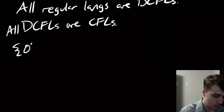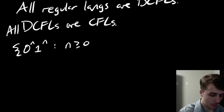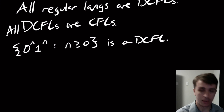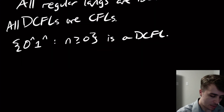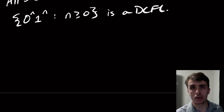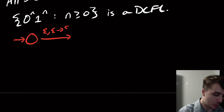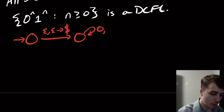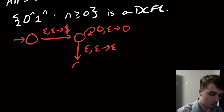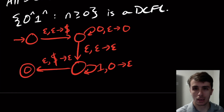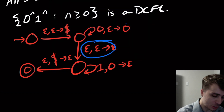One thing we can show is that the language 0^n 1^n — this famous non-regular language — is a deterministic context-free language. The normal PDA we construct for this is not a deterministic PDA. We push a dollar sign at the beginning, go to a state where whenever we see a zero we push a zero, then take an epsilon transition to another state where we match all the ones with the zeros, and finally pop the dollar sign and accept. The issue is the epsilon transition and the self-loop — together they violate the DPDA condition.